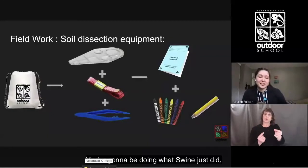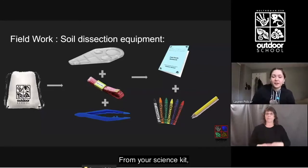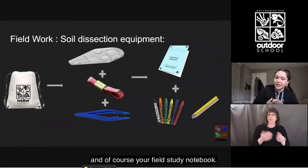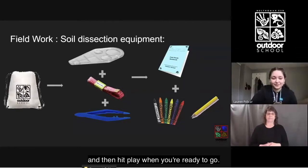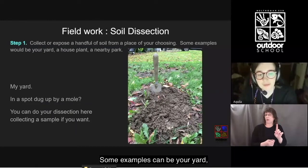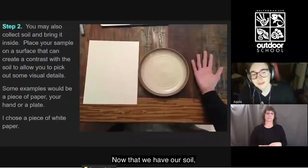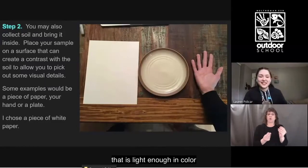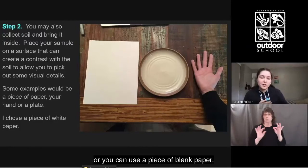Now it's your turn. You're going to be doing what Swine just did but for your own field work, which you'll share in your next class. From your science kit you'll need your magnifying glass, tape measure, tweezers, crayons, your pencil, and your field study notebook. Pause this video while you collect these things, then hit play when you're ready. The first step is to collect or expose a handful of soil from a place of your choosing — examples include your yard, a house plant, a molehill, or a nearby park.